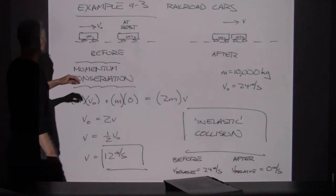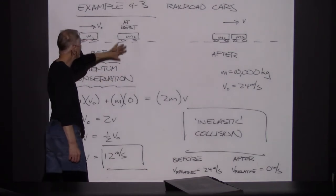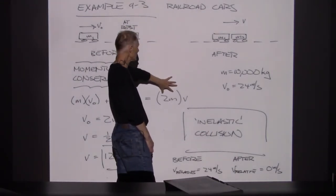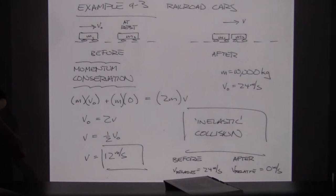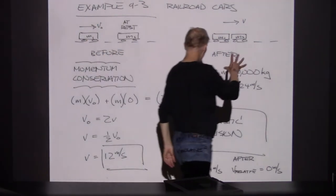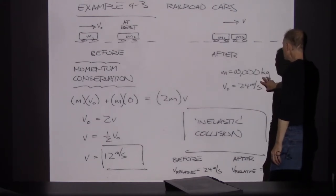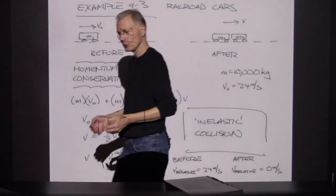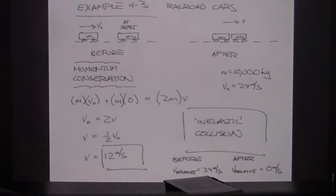Both cars had a mass of 10,000 kilograms, and the initial velocity was 24 meters per second. This is referred to as a totally inelastic collision, meaning there's no relative speed of separation — the speed of separation is zero. The two objects are moving together at the same speed after.